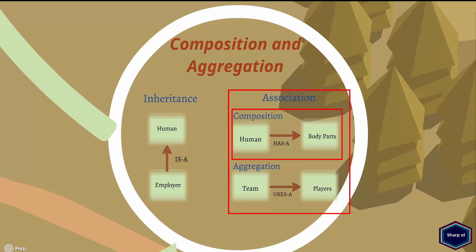A composition relationship is created when one of the classes is composed of one or more instances of other classes. One class plays the role of a container and the other plays the role of content. If the container object is deleted, then all of its content objects are deleted as well. For example, you can think of a human which has different body parts. A human can live without some body parts, whereas body parts cannot exist alone. So when a human dies, all body parts die as well.